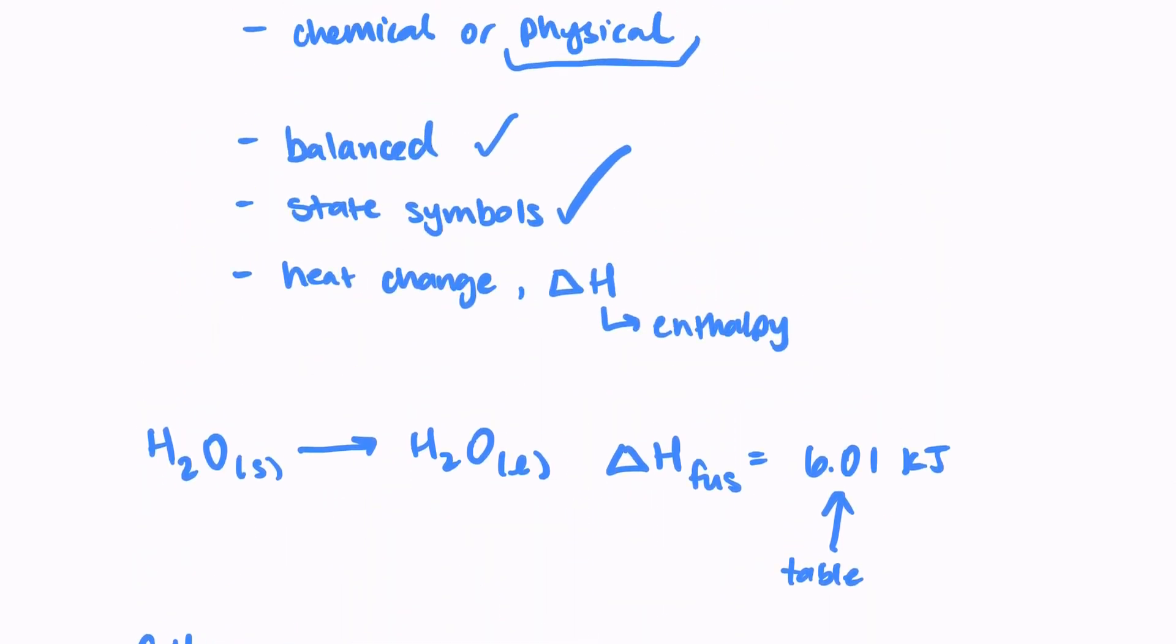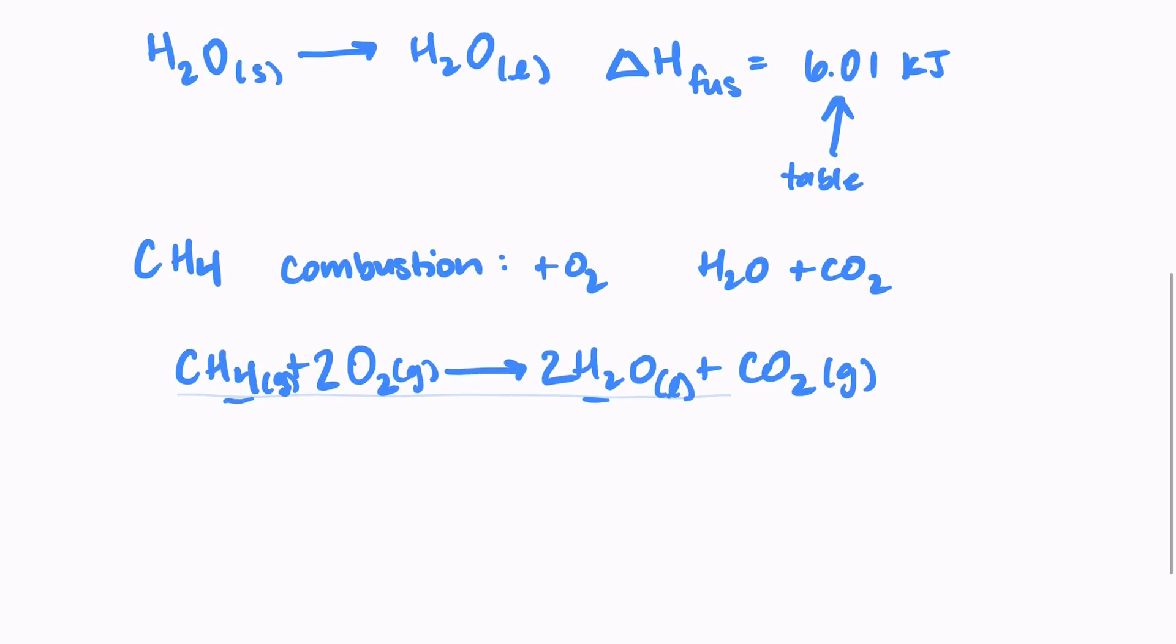Let's check our list. It's balanced. It has state symbols. We need to add our enthalpy change. So change in H. And this is a combustion reaction. So again, we would look at a table to find this value and it's negative 890 kilojoules.